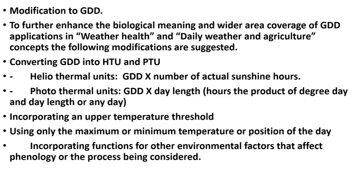Converting GDD into heliothermal units (HTU) and photothermal units (PTU) is very useful. Heliothermal units are obtained by multiplying GDD by the actual hours of bright sunshine. If there are zero sunshine hours, you get zero heliothermal units. If you have 10 sunshine hours and a GDD of 15, then 15 × 10 = 150 heliothermal units. Similarly, photothermal units are GDD multiplied by day length.